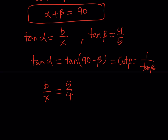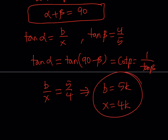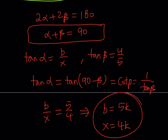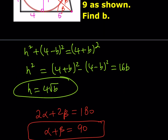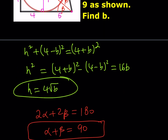Since b and x are proportional with ratio 5 to 4, we can write b = 5k and x = 4k for some constant k. This is our key to the problem. We'll use these values, but we need to decide which equation to apply — we haven't yet used the Pythagorean theorem on the big trapezoid.